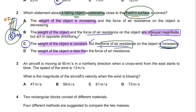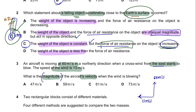Question 3. An aircraft is moving at 60 meters per second in a northerly direction. When a cross wind from the east starts to blow, the speed of the wind is 13 meters per second. What is the magnitude of the resultant velocity? This is regarding resultant force—you have the aircraft moving north at 60 m/s and a cross wind from the east. Using Pythagoras' theorem: resultant equals the square root of 60 squared plus 32 squared, giving us a value of 61. So the answer is C.